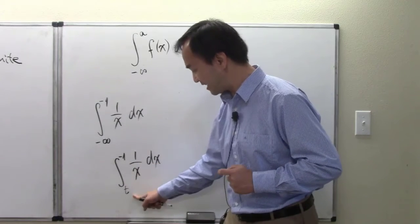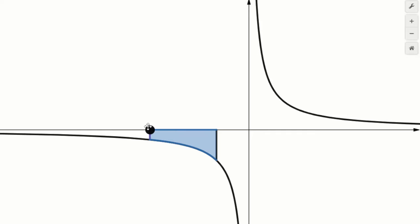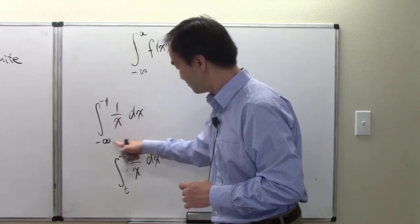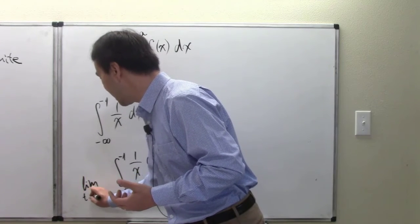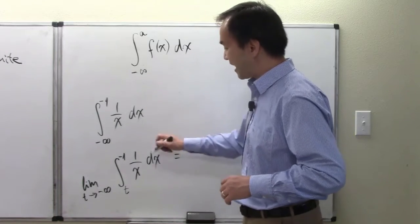The fundamental theorem of calculus: the anti-derivative of one over x is natural log of absolute value of x, evaluated from t to negative one. Then we take the limit as t goes to negative infinity.